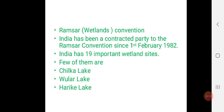India has been a contracting party to the Ramsar Convention since 1st February 1982. India has 19 important wetland sites under this convention. A few of these are: Chilka Lake, Wular Lake, Harike Lake, Loktak Lake, and Sambar Lake. These lakes come under the Ramsar Convention, which itself comes under the World Heritage Convention.